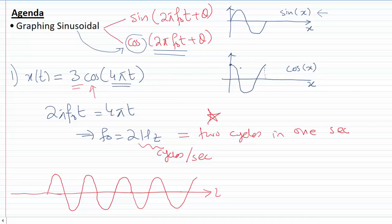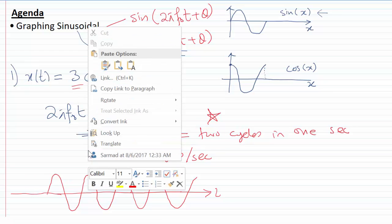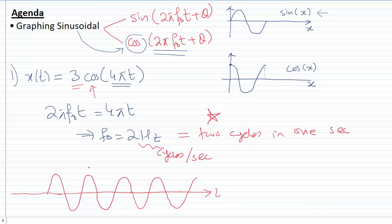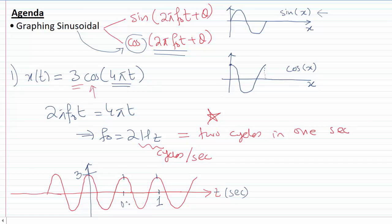Since this is a cosine wave, it starts from one, so I put my origin here. The amplitude is 3, so we'll have 3 at the top, and there's no phase shift. For the x-axis labels: frequency is 2 hertz, meaning two cycles in one second. The first cycle ends at 0.5 seconds, and the second cycle ends at 1 second. That's the plot of x(t) = 3cos(4πt).